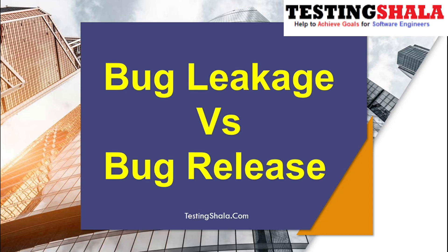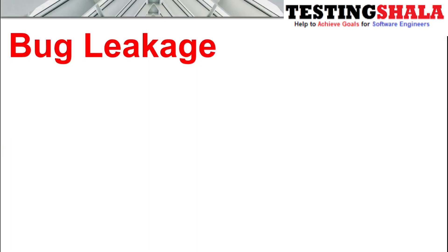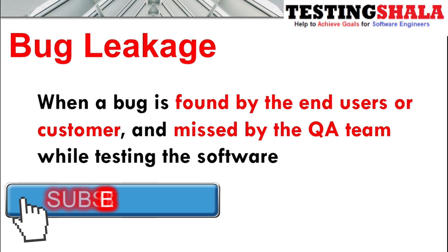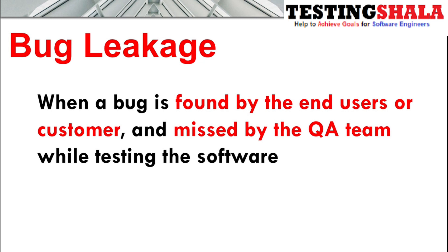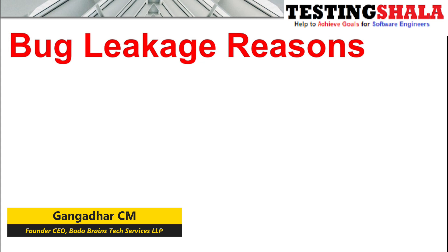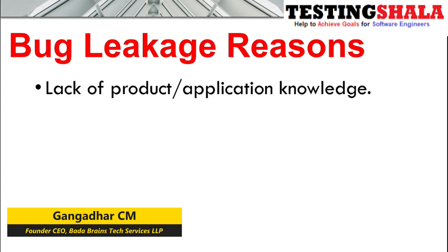What is the difference between bug leakage versus bug release? Bug leakage is when a bug is identified or found by an end user or a customer, not by the team which tested the product. We will also try to understand the reasons for bug leakage, where the tester is not able to find the bugs but the end customer is able to find the given bug.